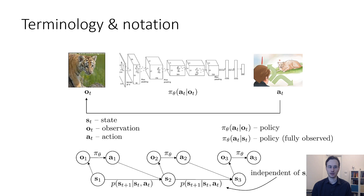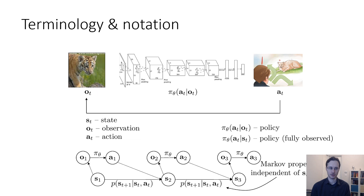That is to say, the future is conditionally independent of the past given the present. This is a very important independence property, because if you want to make a decision that will impact future states, you do not have to consider how you reached the current state — it's enough to just consider your current state and forget about previous states. This is called the Markov property, and it is very important in reinforcement learning and sequential decision making, because without it we would not be able to formulate optimal policies without considering entire histories.